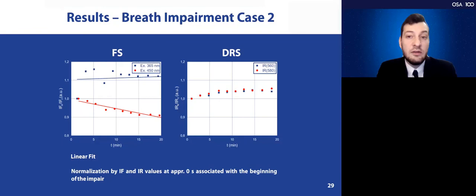In the second example of breath impairment case, we see, again, the growth of the intensity in the excitation in the wavelength of 365 nanometers and the strong decrease in the excitation of 450 nanometers. And again, in the first five minutes, we see the growth of the intensity in time.